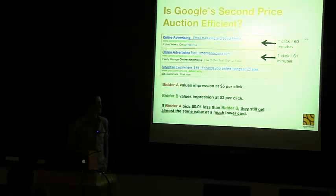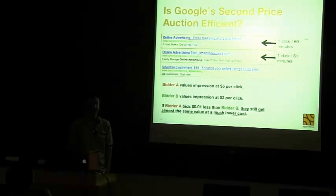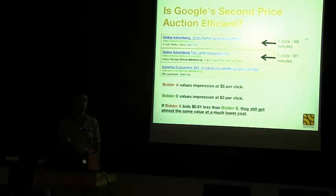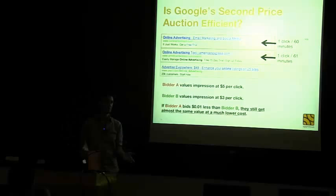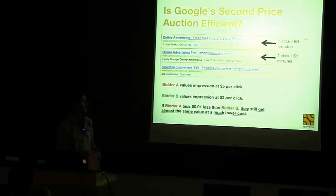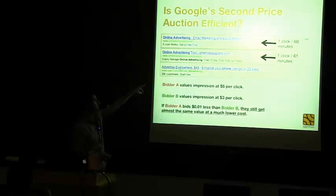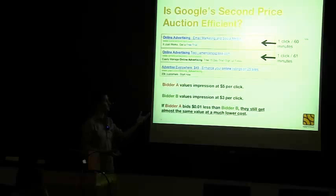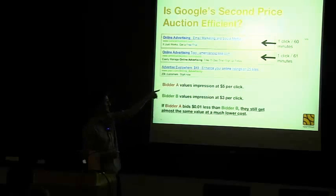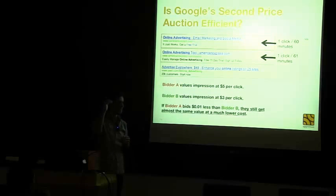A lot of academic research has been done on Google's auction model, and people have discovered it has a few inefficiencies. It's worth noting that Google doesn't actually use a pure generalized second-price auction anymore — there's a lot more that goes into it. One big issue with generalized second-price auctions is what happens if a bidder values two ad spots at effectively the same value. For example, if I get about the same click-through rate whether I'm in the first or second placement — one click every 60 minutes versus one click every 61 minutes.